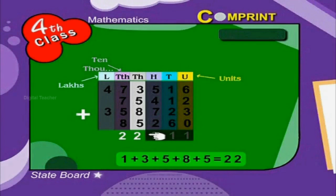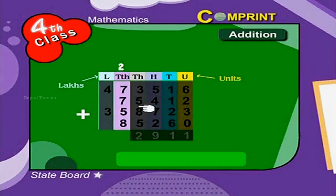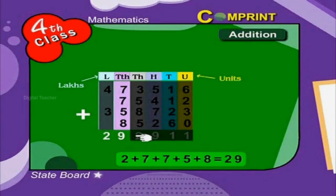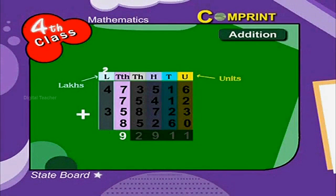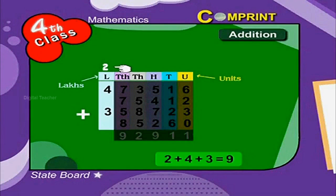Let us carry 2 to the ten-thousands place. Now let us add the digits of the ten-thousands place. That is 2 plus 7 plus 7 plus 5 plus 8 is equal to 29. Let us carry 2 to the lakhs place. Now let us add the digits of the lakhs place. 2 plus 4 plus 3 is equal to 9.